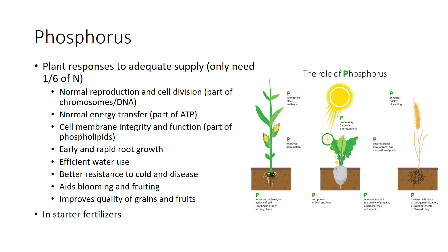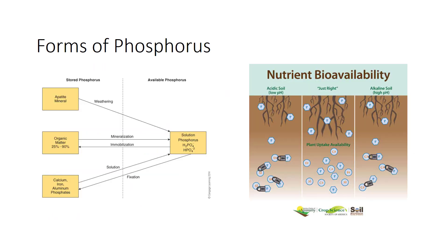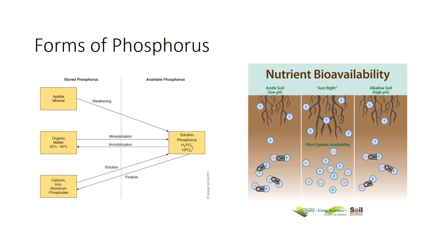Cell membranes contain large amounts of phosphorus, making it important for cell membrane integrity and function. Phosphorus spurs early and rapid root growth and helps a young plant develop roots. Phosphorus helps plants use water more efficiently by improving water uptake by roots. Phosphorus helps plants resist cold and disease, speeds maturity, aids blooming and fruiting, and improves the quality of grains and fruits. Because phosphorus is needed for root growth, it is often a major element in starter fertilizers — those applied at planting. Phosphorus comes from weathering of soil minerals such as apatite. Most phosphorus is stored in organic matter or fixed forms. At any one time, only a tiny amount of phosphate is in solution and available to plants. Many soils contain large amounts of phosphate, but most is unavailable to plants. Phosphate in insoluble forms not free for plant growth is said to be fixed.